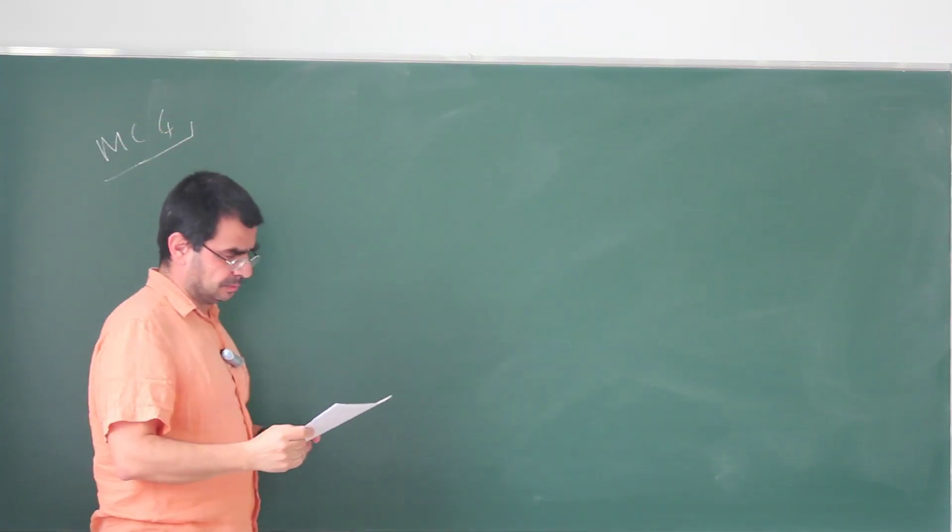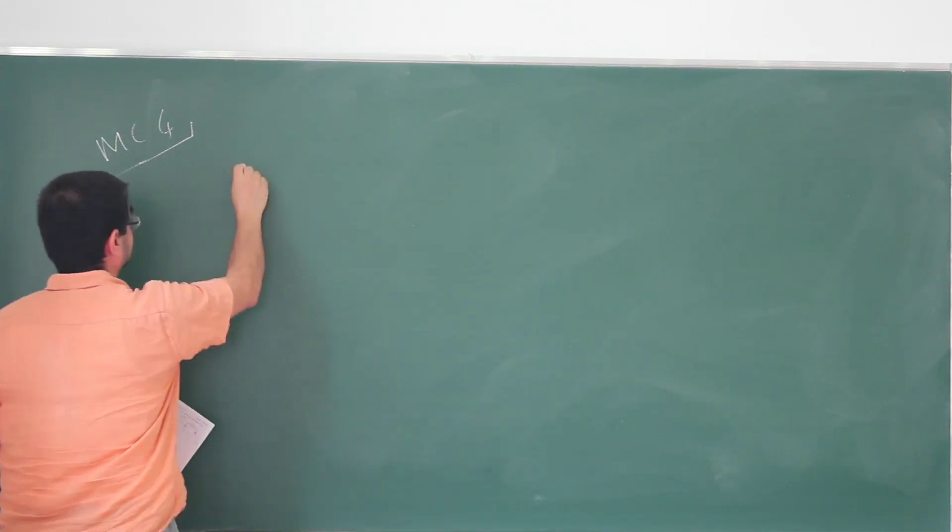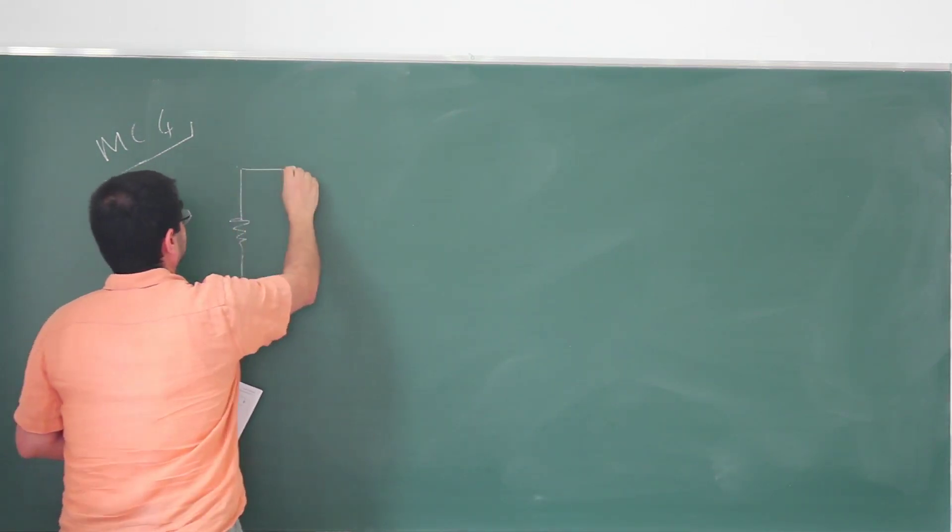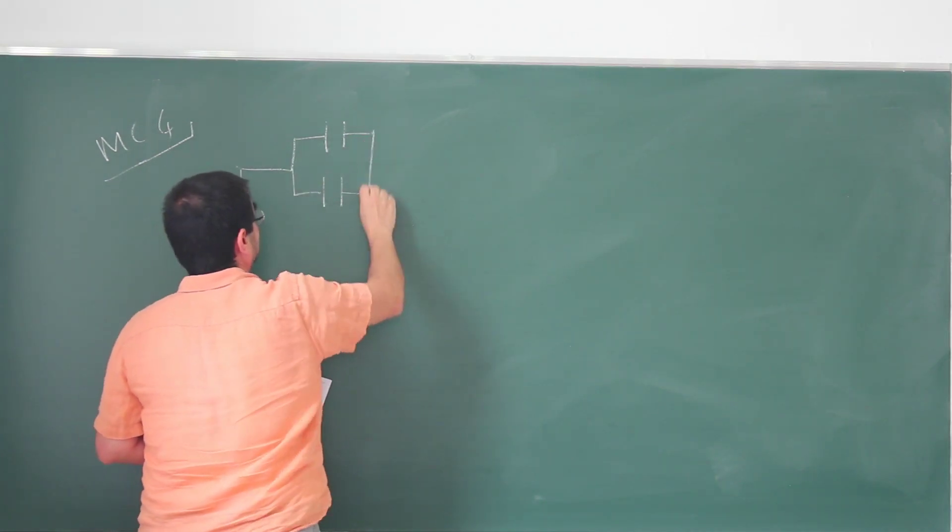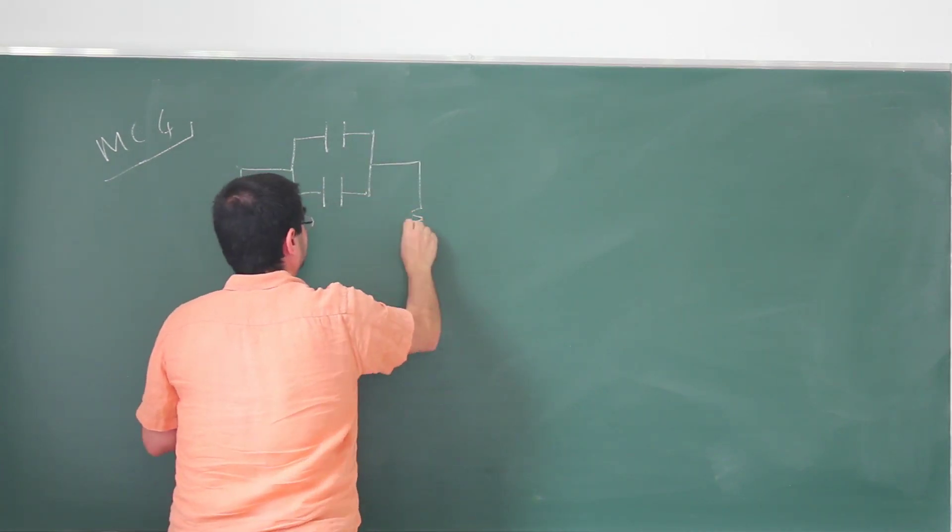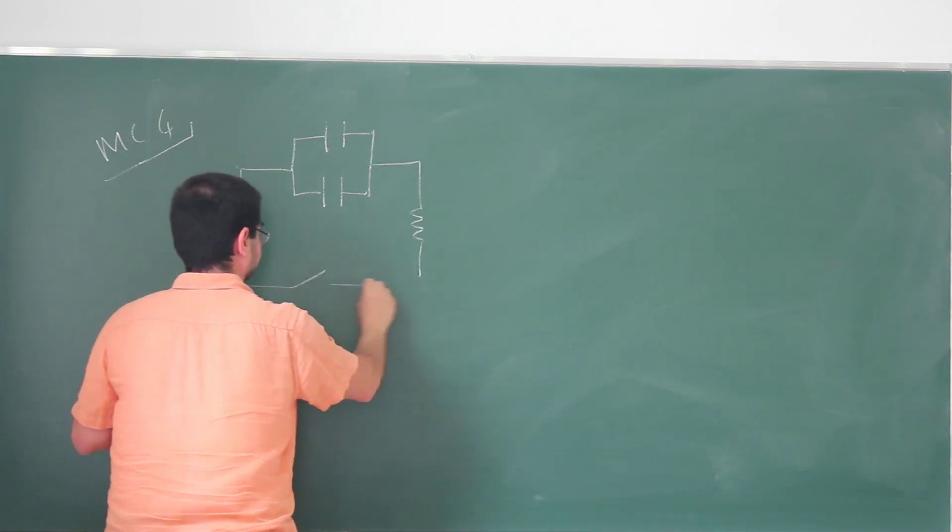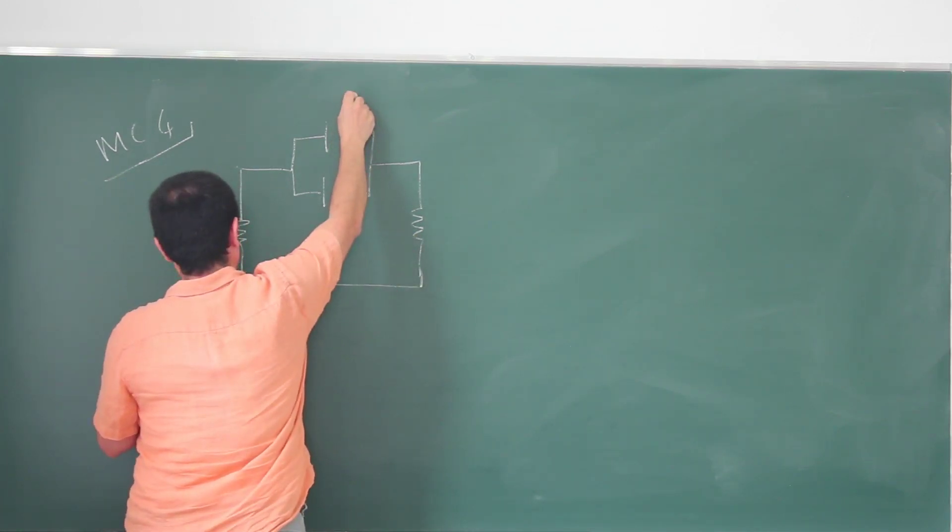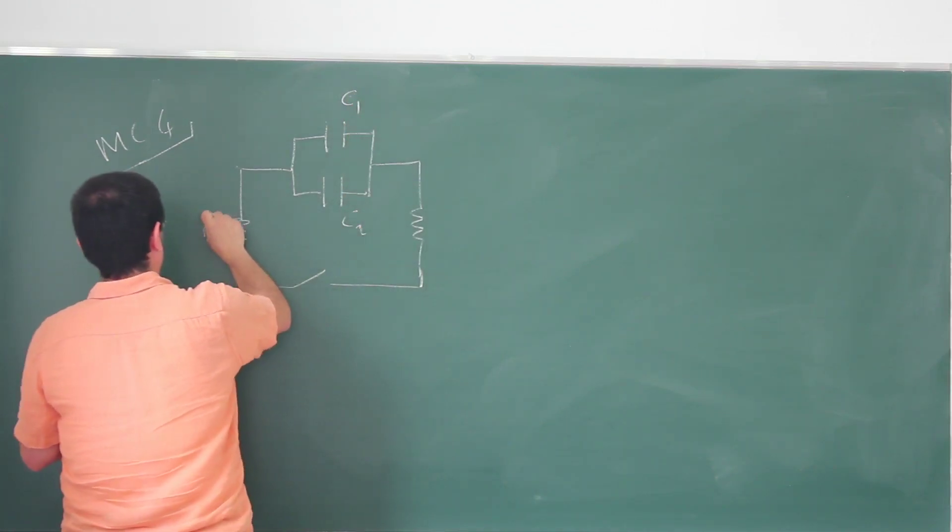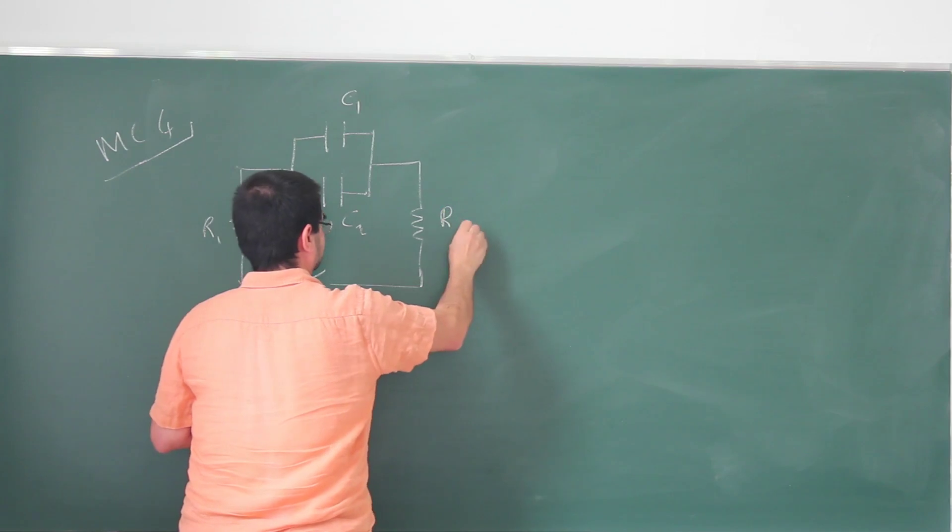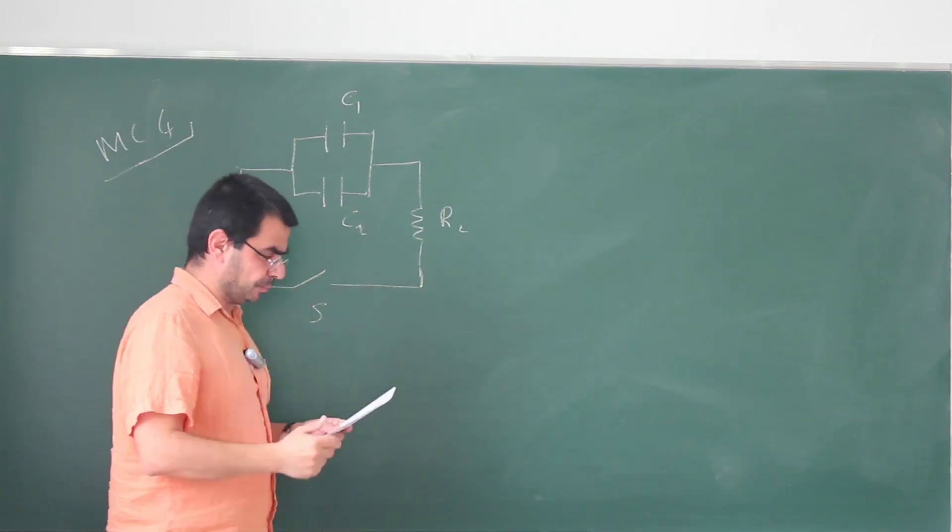For the fourth multiple choice problem, we have a more complicated circuit, though it only looks complicated. We have two resistors and we have a switch. We have two capacitors here, C1 and C2, and this is R1 and R2. This is the circuit, this is our switch, initially it's open.